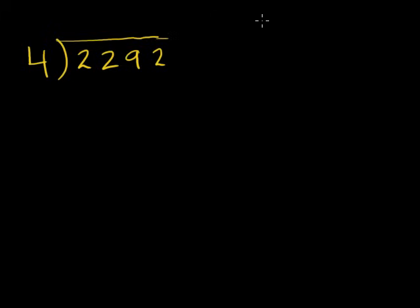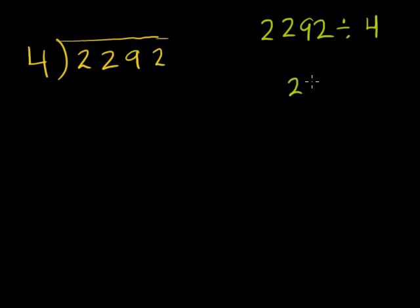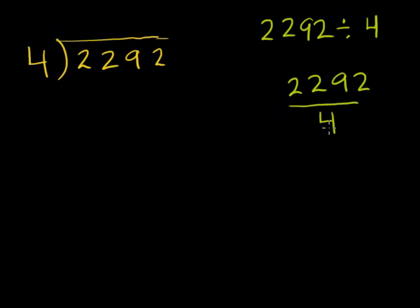Just as a bit of review, this is the same thing as 2,292 divided by 4. And it's actually the same thing — and you probably haven't seen this notation before — as 2,292 divided by 4. These are all equivalent statements on some level. As you can see, that looks like a fraction, in case you have seen fractions already. And that is exactly what it is — it is a fraction. But anyway, I'll just focus on this format, and in future videos we'll think about other ways to represent division. So let's do this problem.